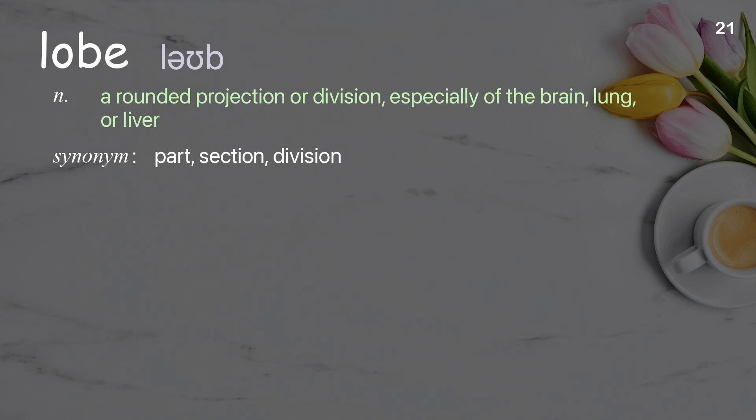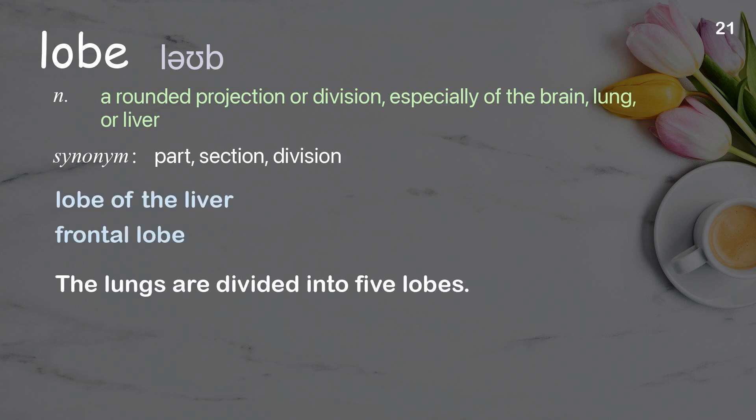Lobe: a rounded projection or division, especially of the brain, lung, or liver. Examples: lobe of the liver; frontal lobe. The lungs are divided into five lobes.